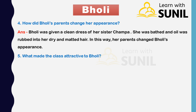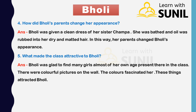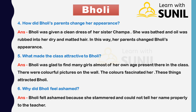Fifth: what made the class attractive to Bholi? Answer: Bholi was glad to find many girls almost of her own age present in the class. There were colorful pictures on the wall and the colors fascinated her — these things attracted Bholi. Sixth: why did Bholi feel ashamed? Answer: Bholi felt ashamed because she stammered and could not tell her name properly to the teacher.